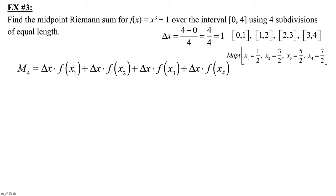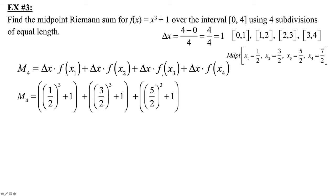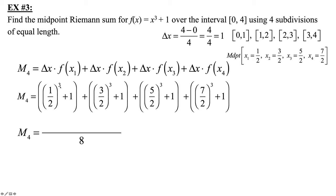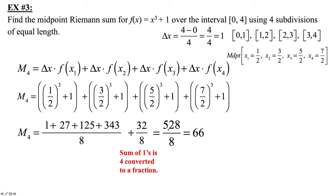Since change in X is 1, we just need to find f(1/2) plus f(3/2) plus f(5/2) plus f(7/2). Substituting into x cubed plus 1: one-half cubed plus 1, plus three-halves cubed plus 1, plus five-halves cubed plus 1, plus seven-halves cubed plus 1. The denominator is 2 cubed equals 8. Numerators: 1 cubed is 1, 3 cubed is 27, 5 cubed is 125, 7 cubed is 343. For the four 1's with denominator 8, that's 32 over 8. Adding everything: 528 over 8, which simplifies to 66.